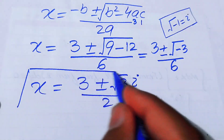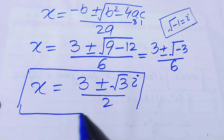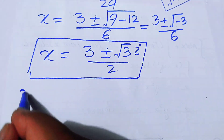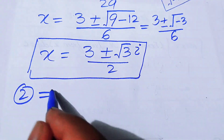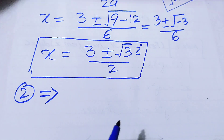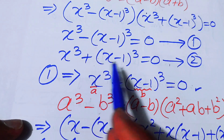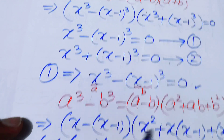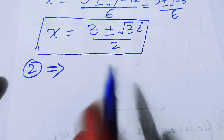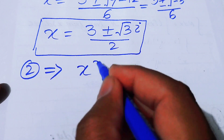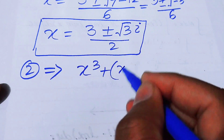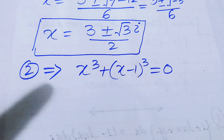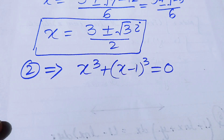These are the two complex roots from equation 1. Now for equation 2: x³ plus (x−1)³ equals 0.